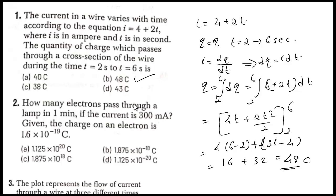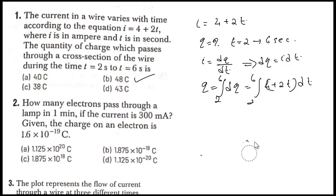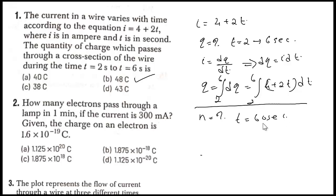Moving to the second question: how many electrons pass through a lamp in one minute if the current is 300 milliamperes? Given the charge on an electron is 1.6 × 10⁻¹⁹ coulombs. The data: time = 1 minute = 60 seconds, i = 300 mA = 300 × 10⁻³ A, charge of electron e = 1.6 × 10⁻¹⁹ coulombs.